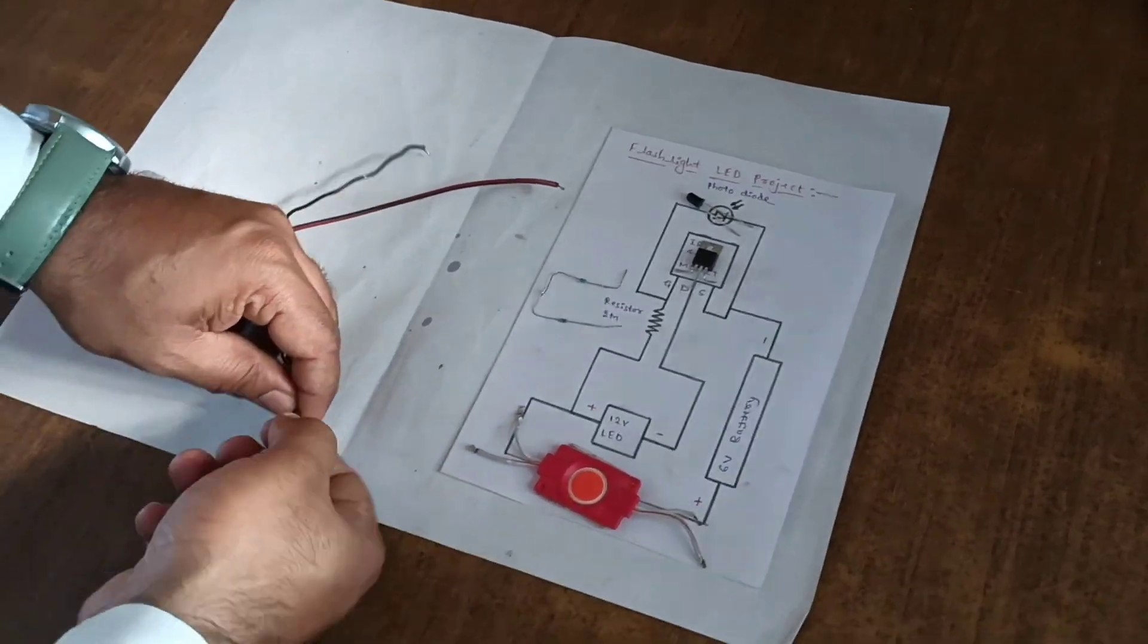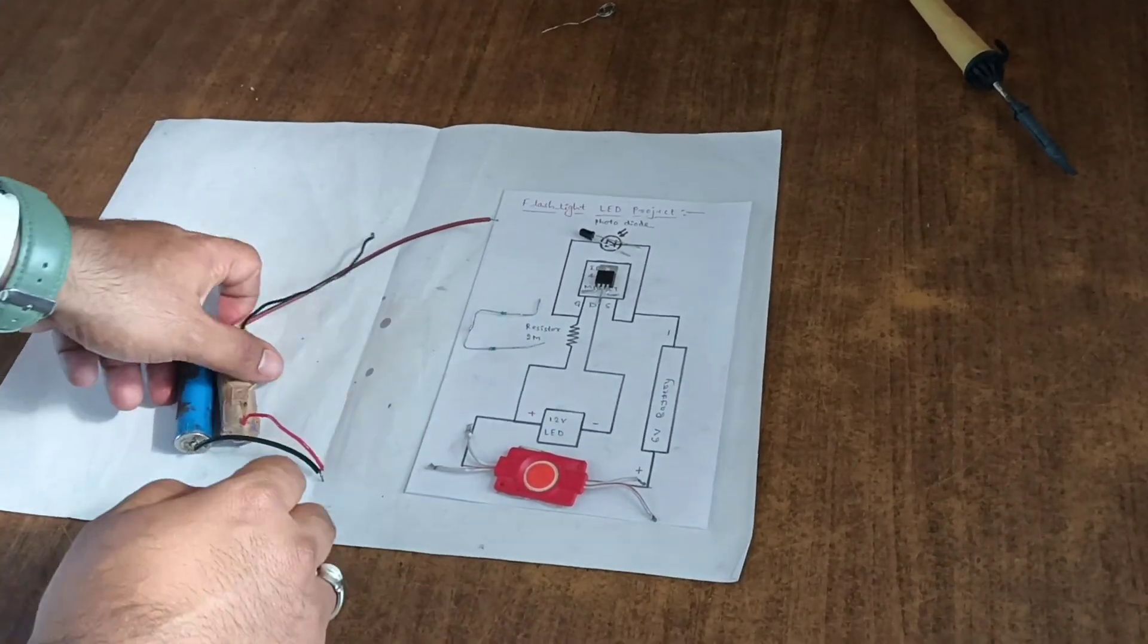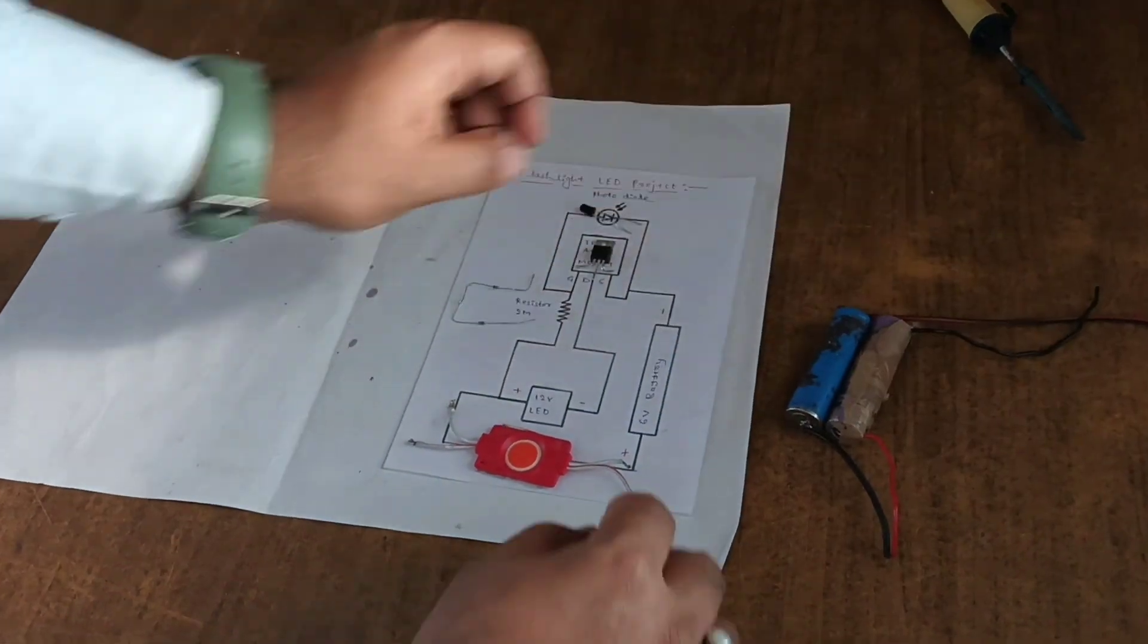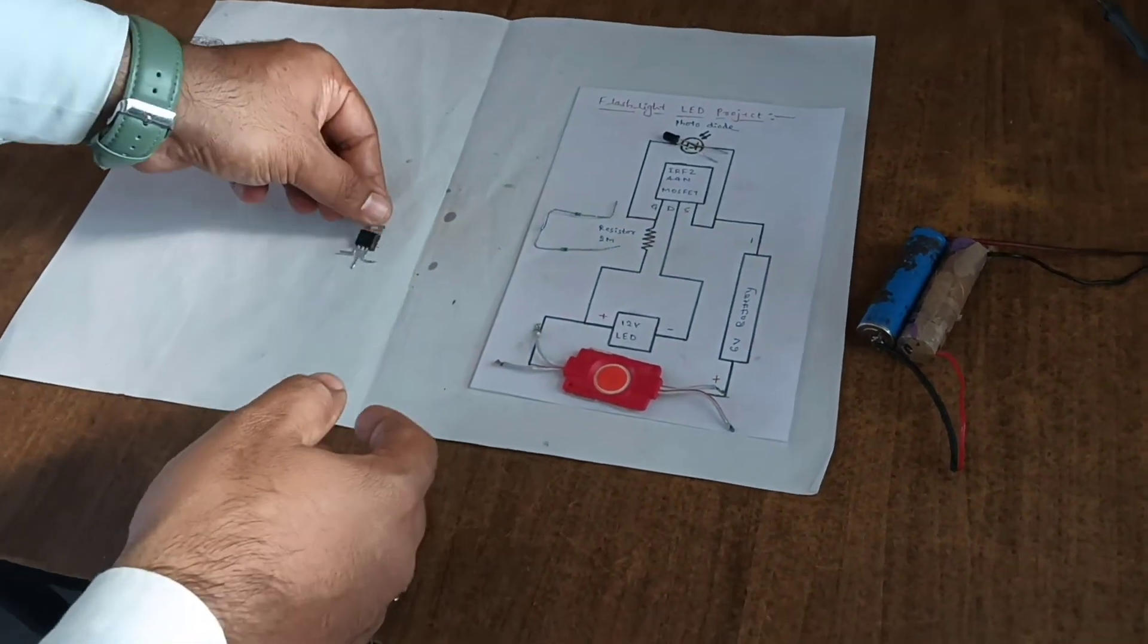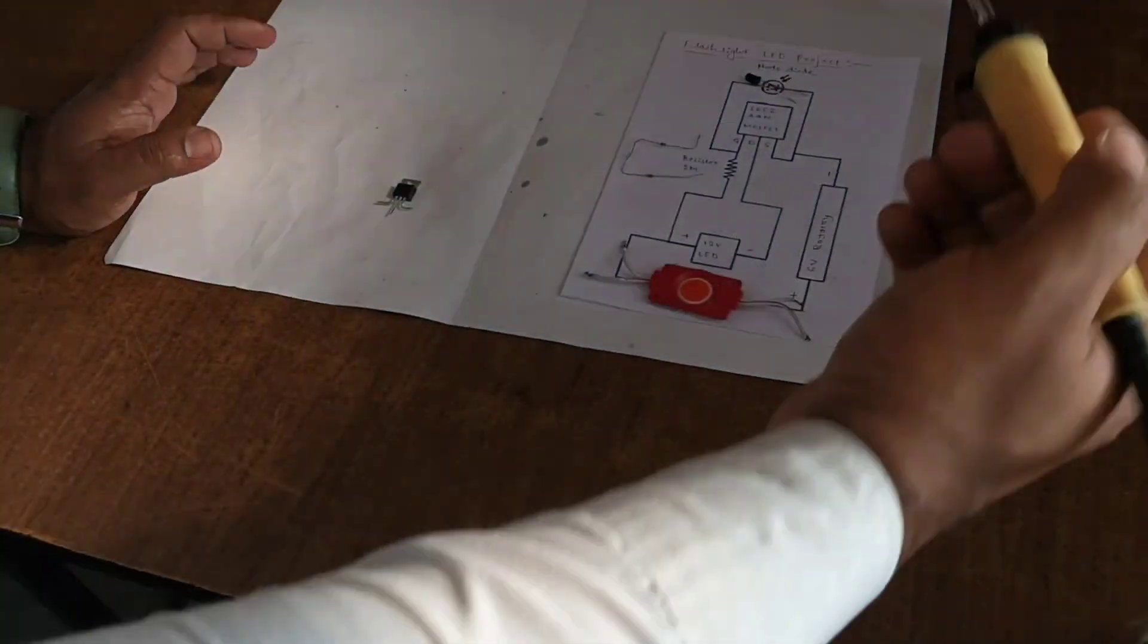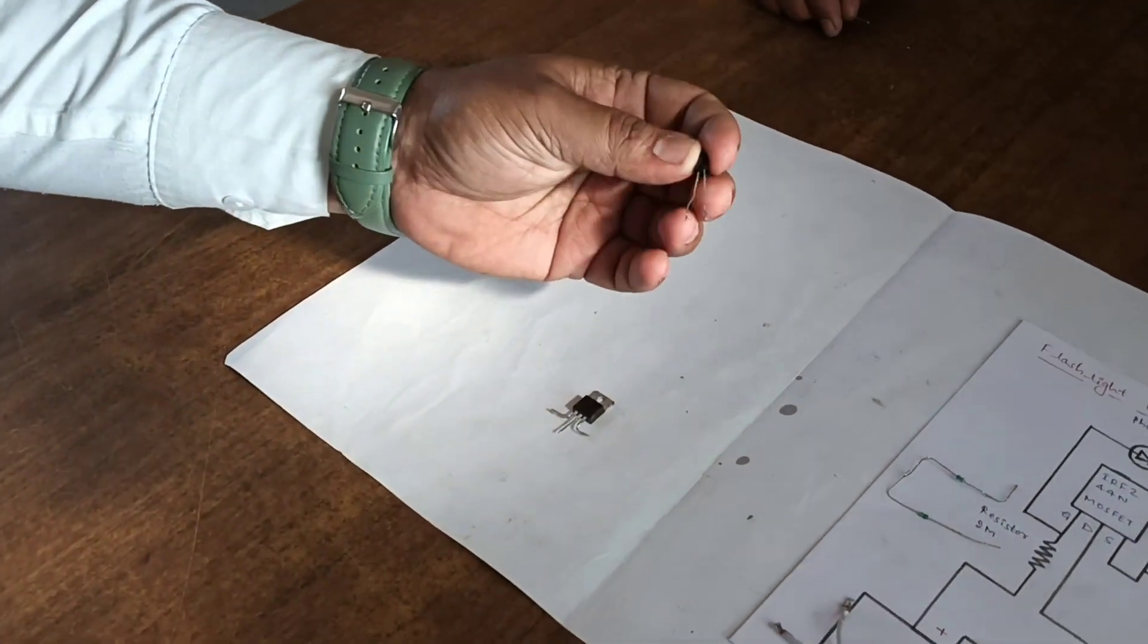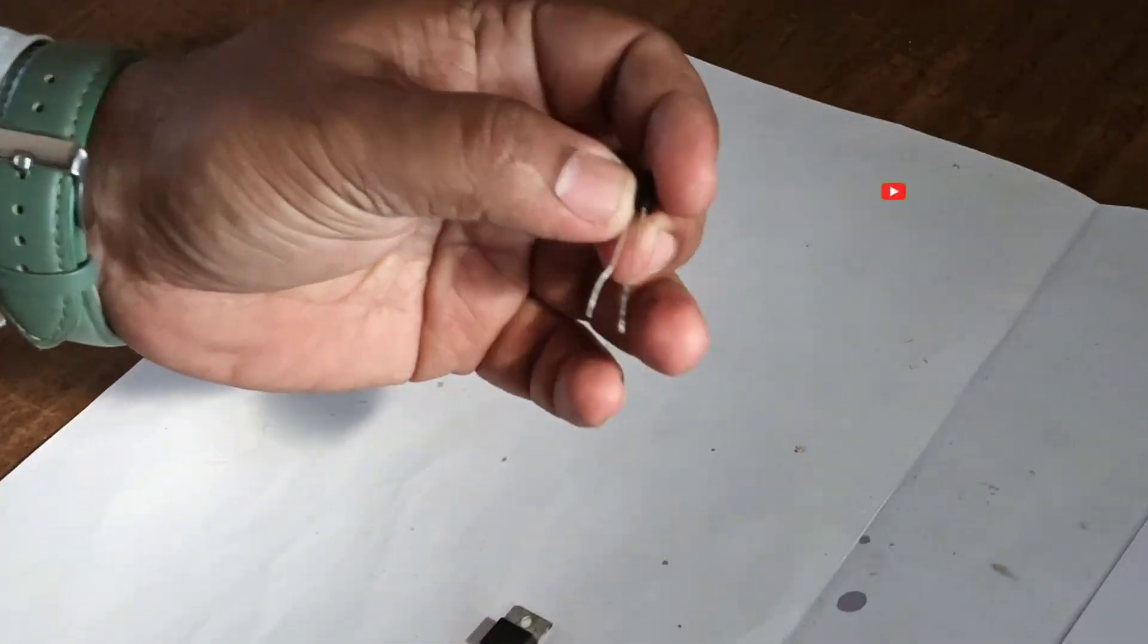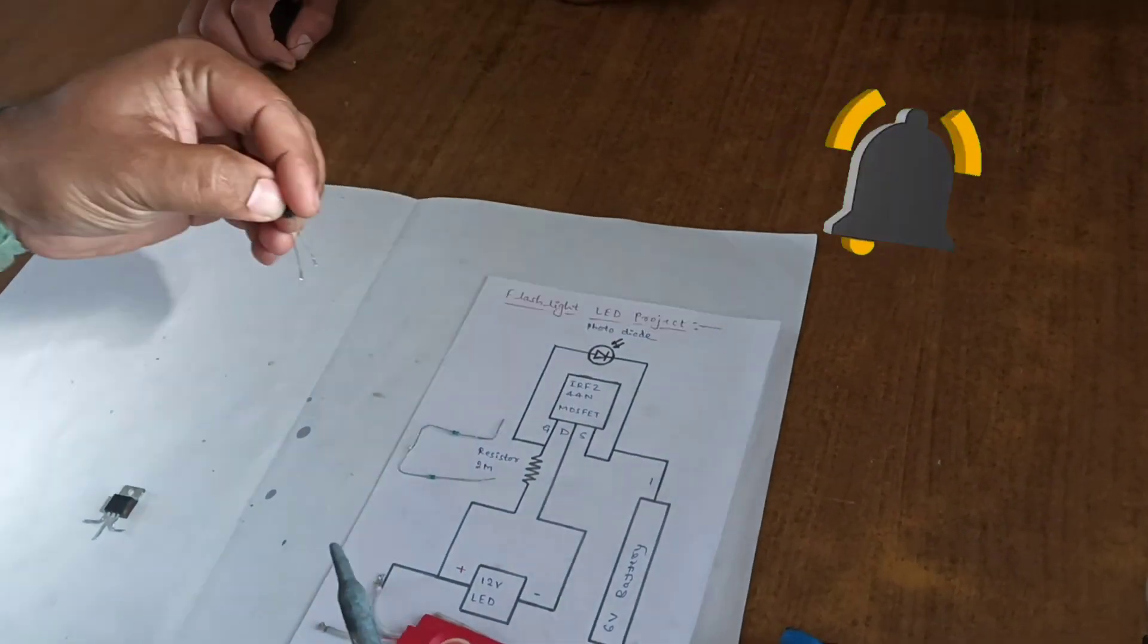Let's start the connection. Take MOSFET. This is the photodiode, long length that is positive, short length is negative. We connect positive to gate.